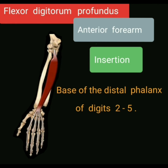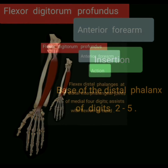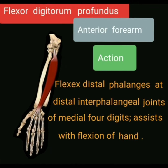Insertion: the flexor digitorum profundus muscle is inserted into the base of the distal phalanx of digits 2 to 5. Action: the flexor digitorum profundus muscle flexes the distal phalanx at the distal interphalangeal joints of the medial four digits, and assists with flexion of the hand.